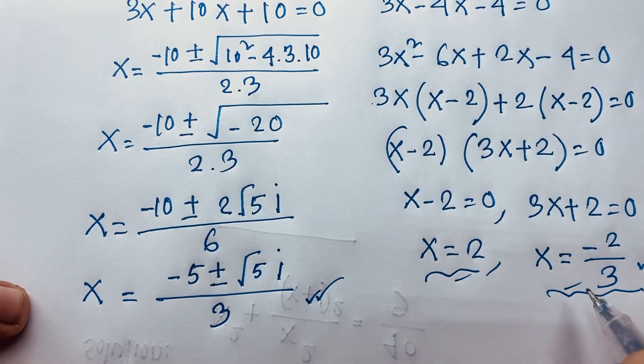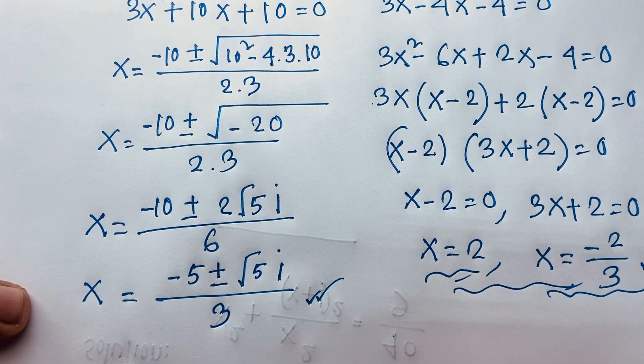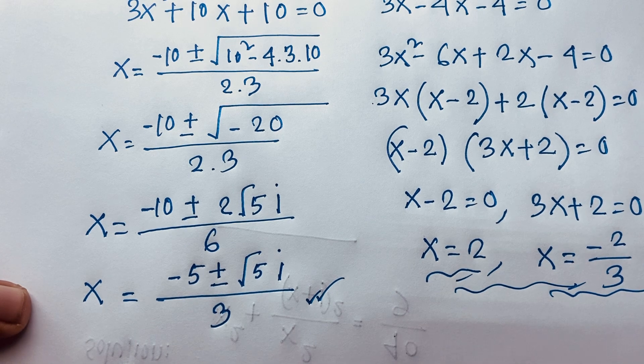So our solutions are x = 2, x = −2/3 (both real solutions), and x = (−5 ± √5 · i)/3 (complex solutions). Thank you all. If you enjoyed this video, please subscribe to my channel for other interesting videos. Goodbye, take care.